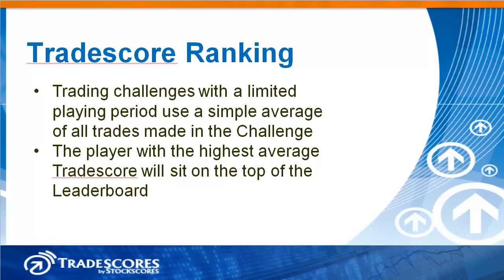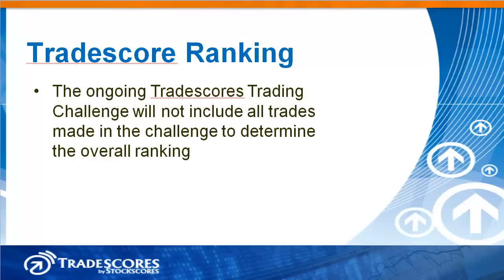Once you start to accumulate multiple trades, you begin to move up the leaderboard for the overall trade score ranking. There are two methods for calculating the average trade score. If you are playing a specific trading challenge with a limited playing period — for example a game that runs for 2 or 3 months — then we take a simple average of all trades made in the challenge. However, if you are playing the ongoing trade scores challenge, which does not have an end date, then we expire trades over time and factor in only the most relevant trades for your overall trade score ranking. The player with the highest average trade score will always sit on top of the leaderboard, and how the ranking is calculated is relevant to the type of game being played.